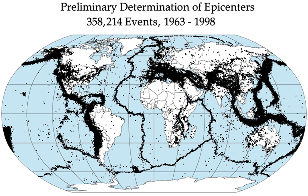Earthquakes also frequently occur in the Azores in Portugal, Turkey, New Zealand, Greece, Italy, India, Nepal, and Japan, but earthquakes can occur almost anywhere, including downstate New York, England, and Australia. Larger earthquakes occur less frequently, the relationship being exponential—roughly 10 times as many earthquakes larger than magnitude 4 occur in a given time period than earthquakes larger than magnitude 5.